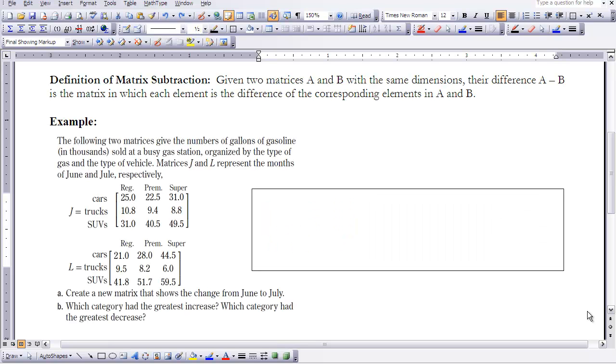The next part of this lesson is working with subtraction of matrices. So in order to subtract matrices, we need to follow the same process that we did for adding. We need to have two matrices that have the same dimensions, and we're just going to find the difference between their corresponding elements. So we have an example here that we're going to work through. We have cars, trucks, and SUVs, and the amount of gasoline that is sold at a busy gas station by the type, and it's organized by the type of fuel that they use. So regular, premium, and super.